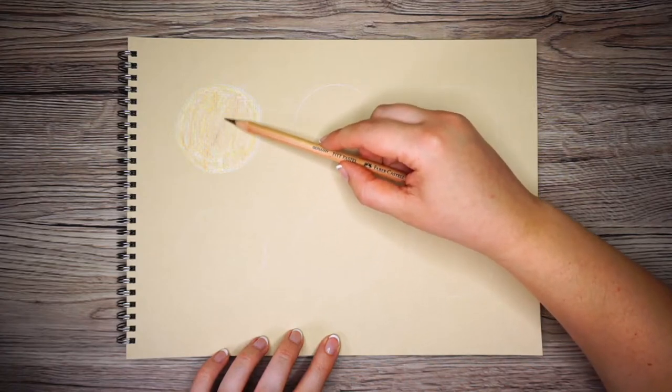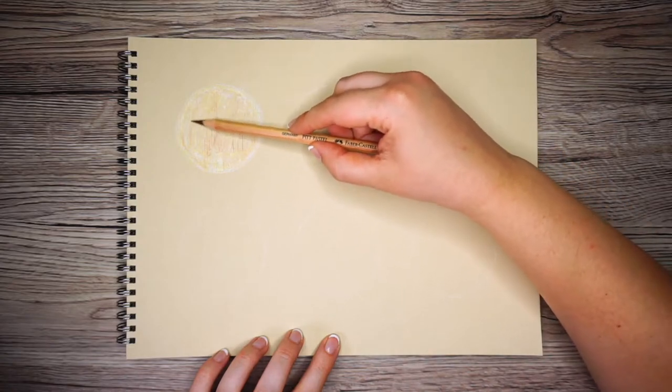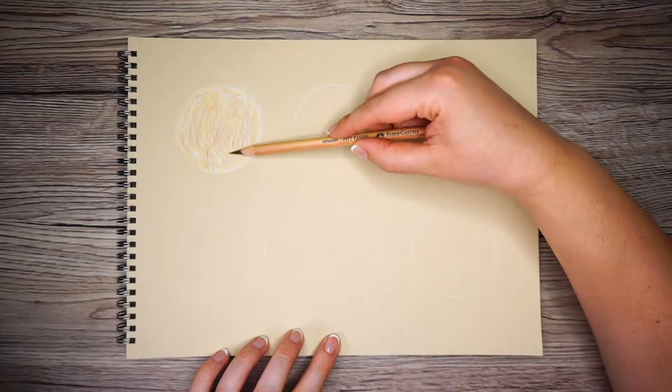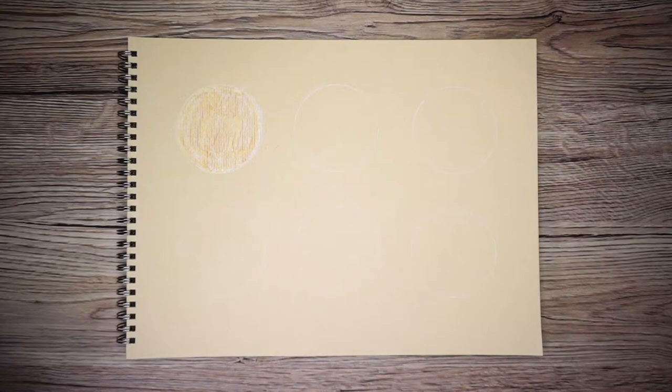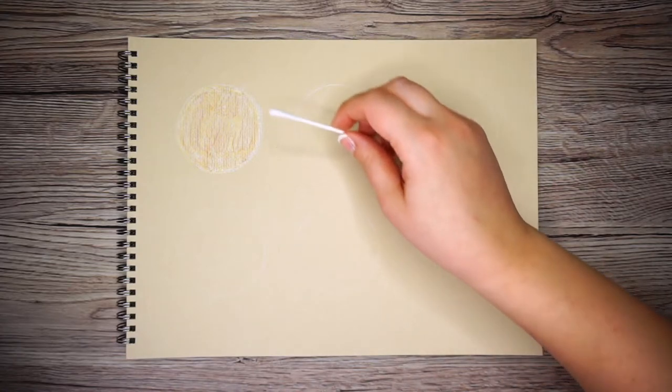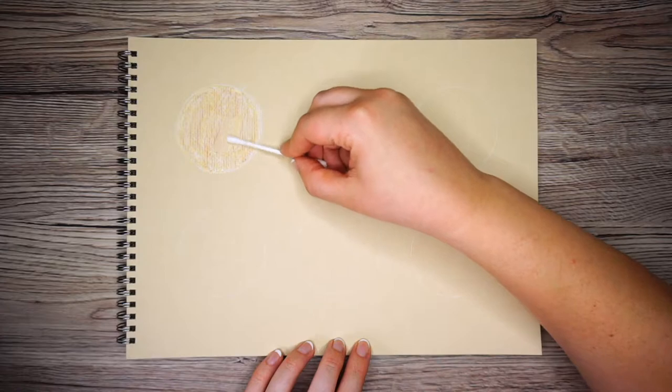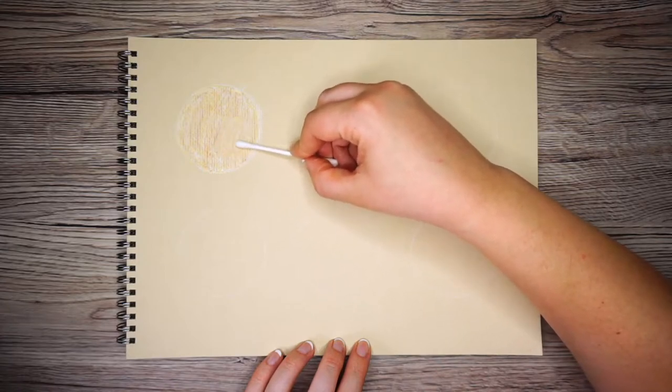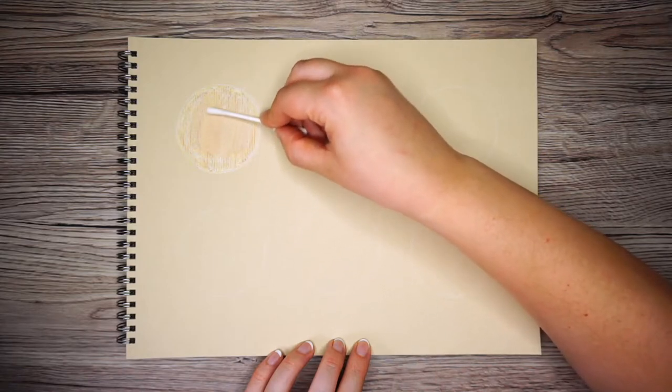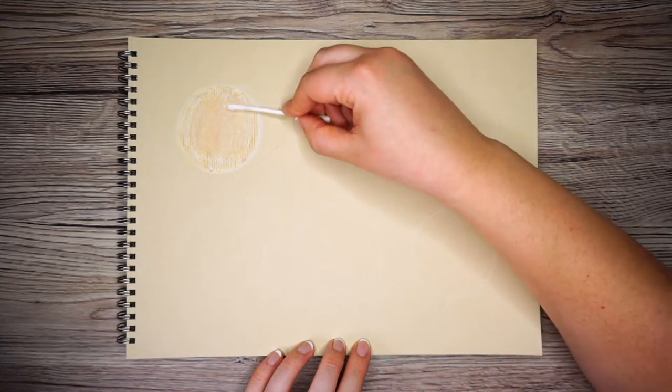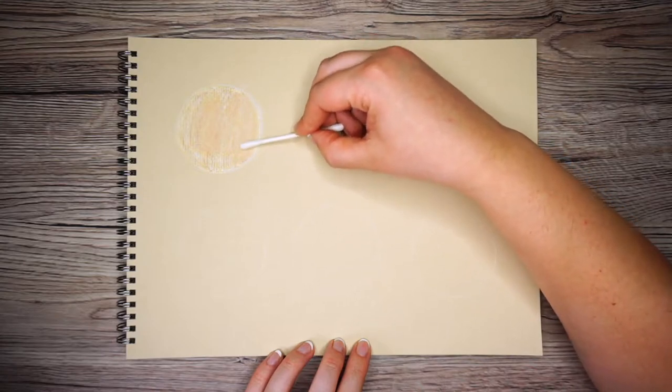Okay so now I need to blend it all together. So to do this I'm going to use a cotton bud or a q-tip, and I'm just going to again in circular motions blend that together. I really like using these for blending, they're super cheap to buy, you can buy them from a pharmacy or a drug store, they don't cost a lot at all and I just find that they're really effective.